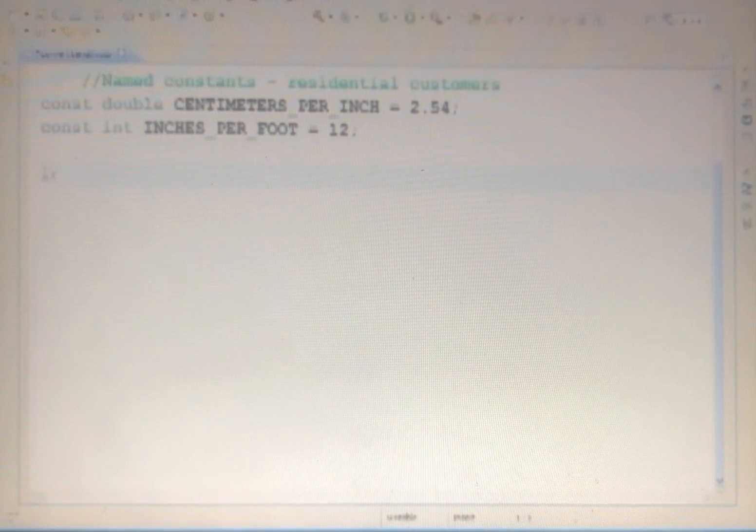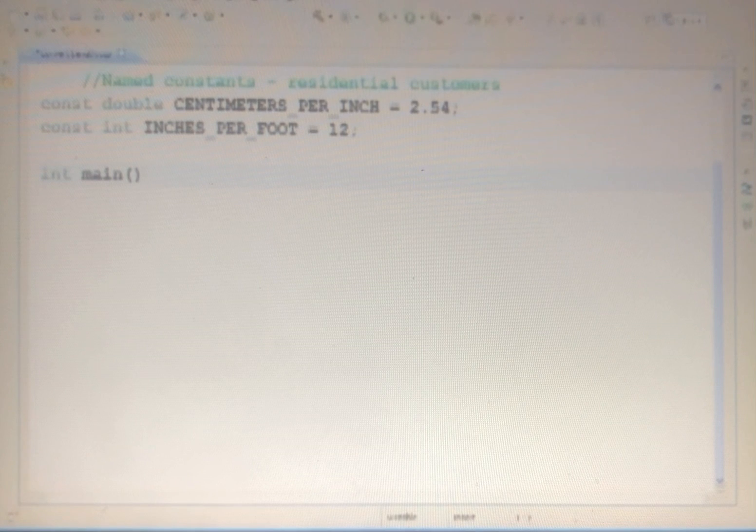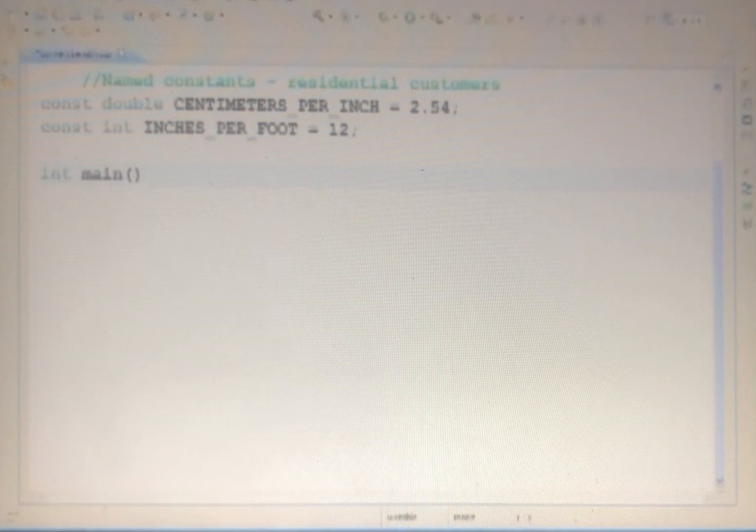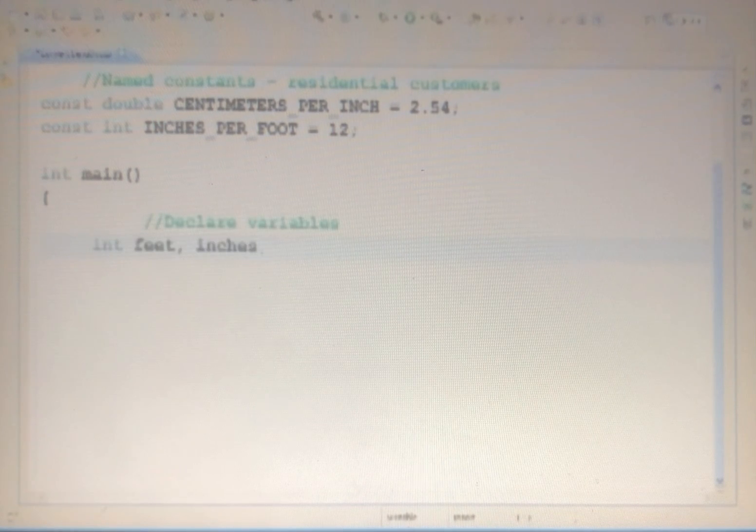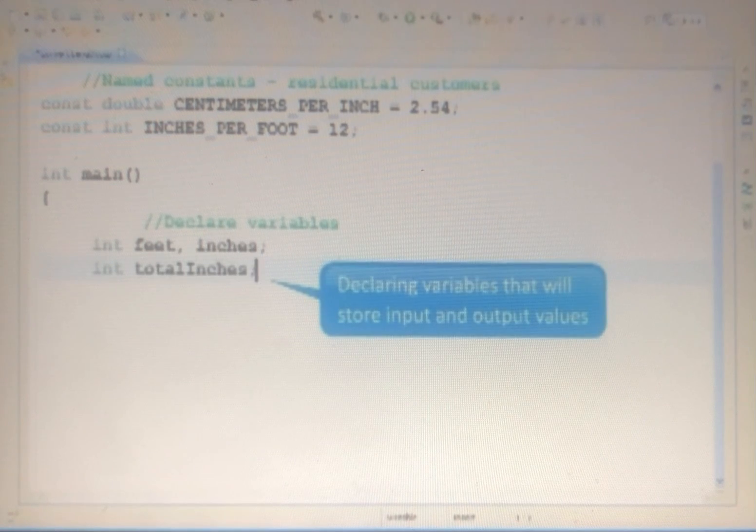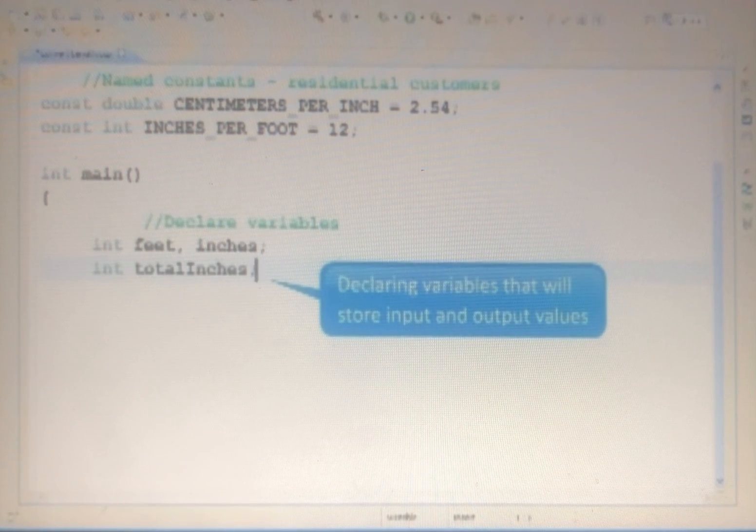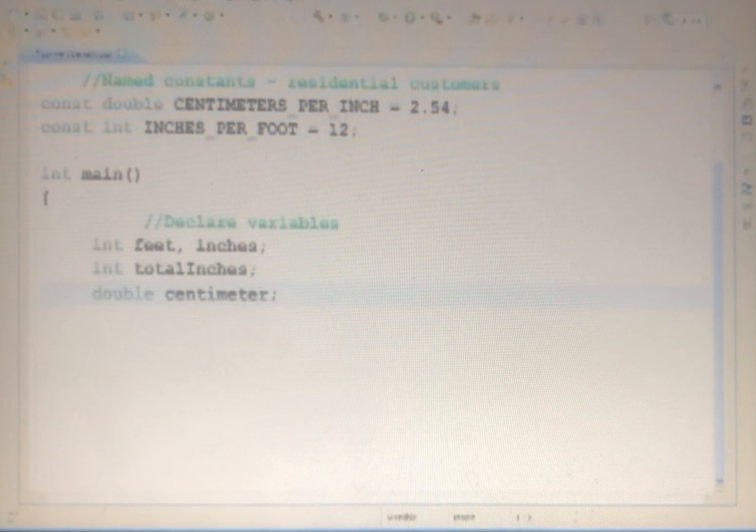This program has only one function, the function main, which will contain all of the programming instructions in its body. The input for the program is two numbers, one for feet and one for inches. Thus, you need two variables, one to store feet and the other to store inches. Because the program will first convert the given length into inches, you need another variable to store the total inches. You also need a variable to store the equivalent length in centimeters.